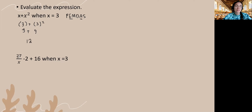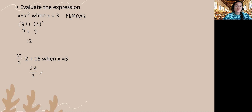Moving on to our next example, we're asked to evaluate the expression when x is equal to 3. We have 27 divided by x, and this quantity is subtracted from 2 plus 16. So I'm going to substitute 3 for x: 27 divided by 3 minus 2 plus 16.